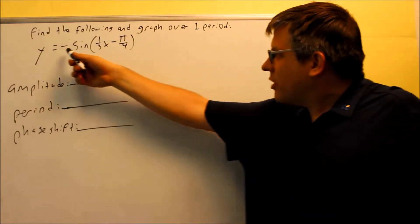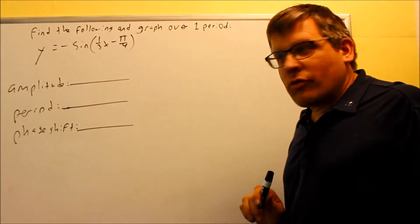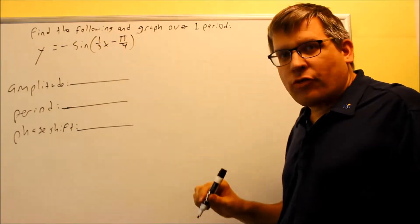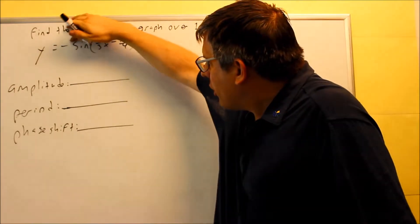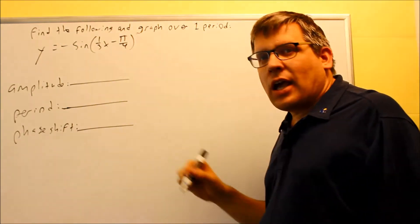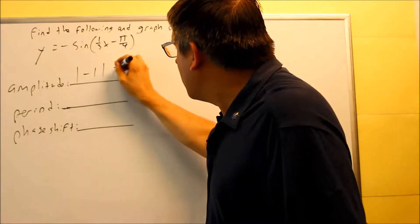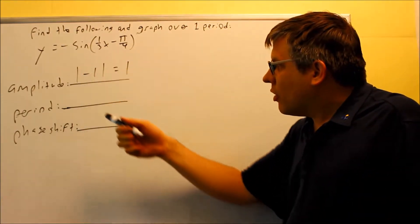We have one more here with the sine, and we have a negative sign in front of it. For the amplitude, there's no number there in front. So if there's no number there, you can always imagine that as being a negative 1 in front. The amplitude of negative 1 is going to be positive 1, so that takes care of that one.